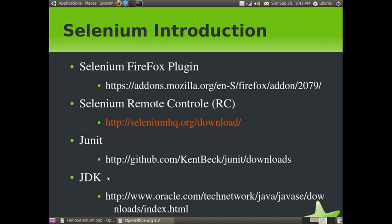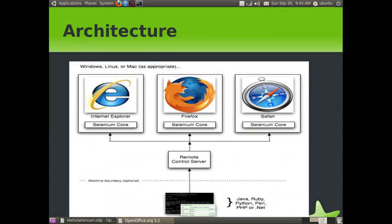You also need a JDK since we are choosing Java as the programming language. Let me show you the architecture of Selenium. The three main components of Selenium are: the Selenium test case, which is written in Java, Ruby, Python, or any programming language, the Remote Control Server, and the browser.